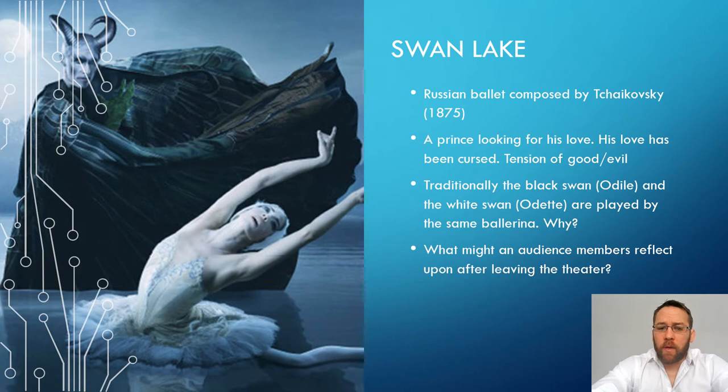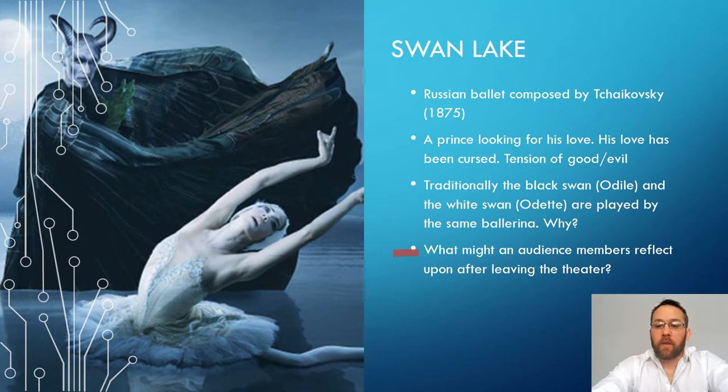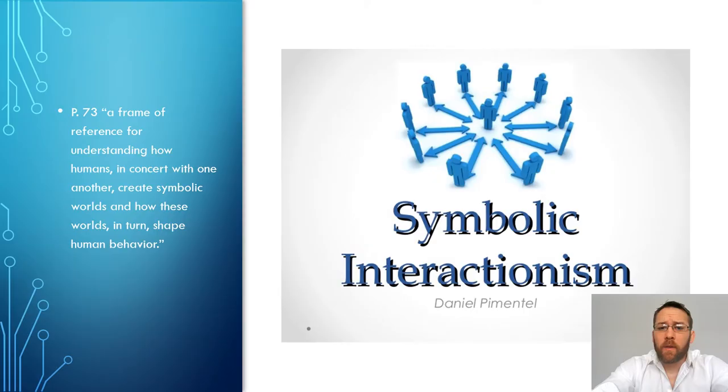Go ahead and watch the clip on Swan Lake below. The big takeaway question is how might an audience reflect on the idea of the same person playing two different characters, and how that person is supposed to interact with other characters based on whether it's played as the white swan or the black swan. This is a good-evil dichotomy situation.